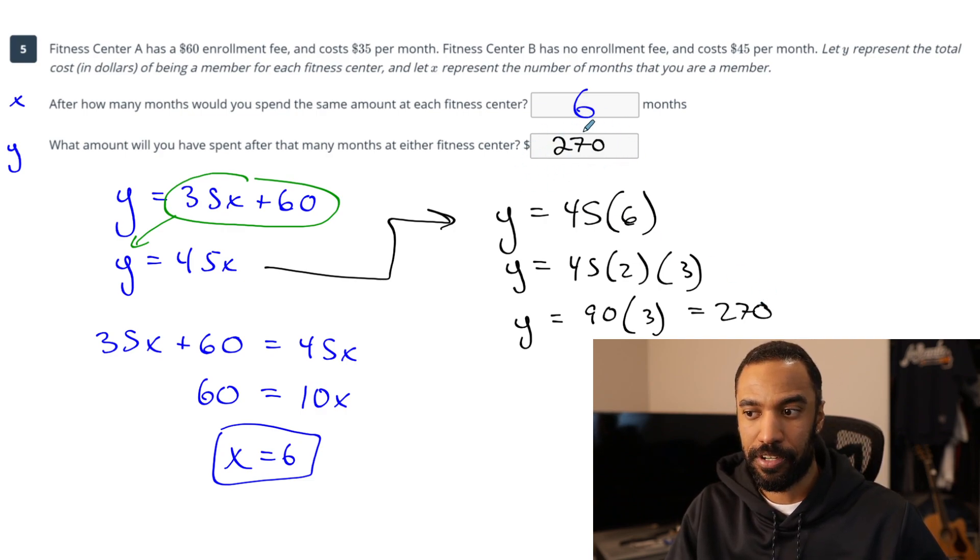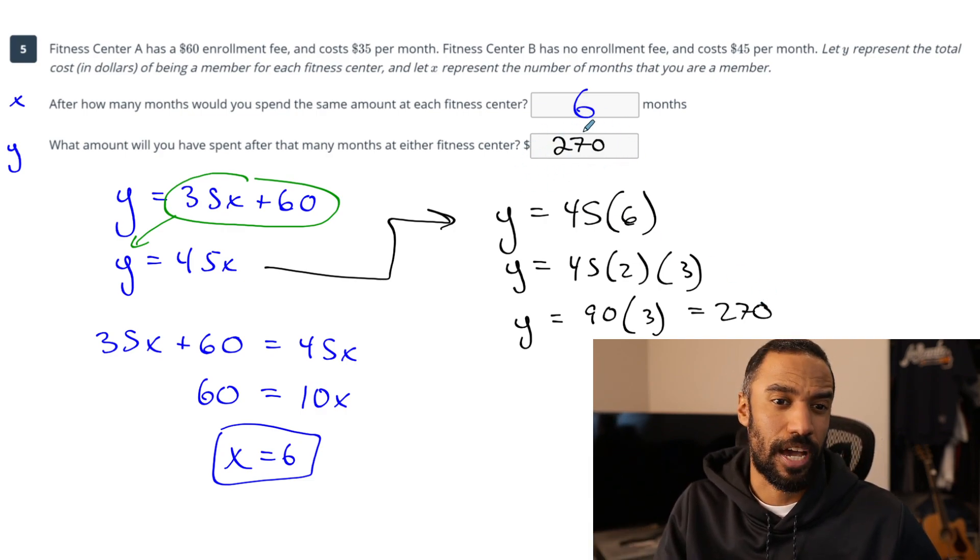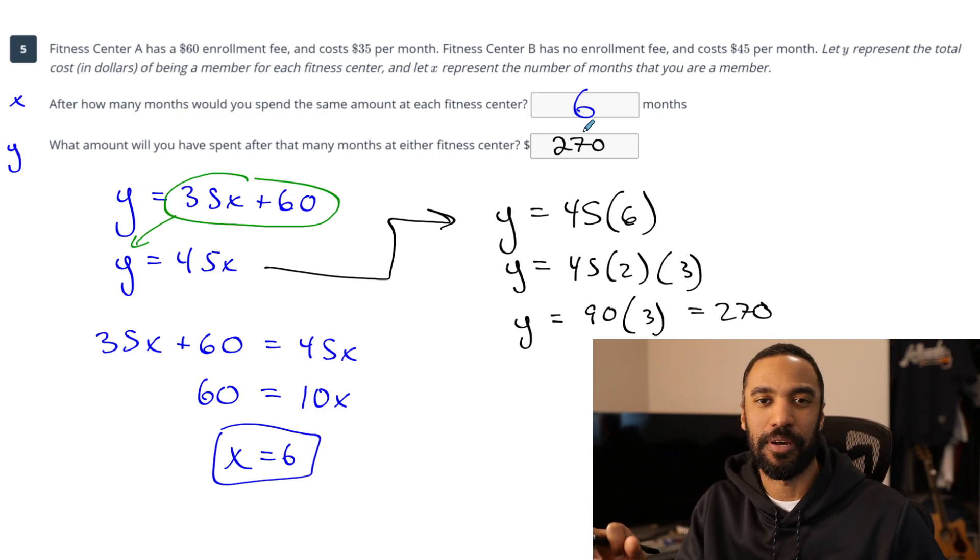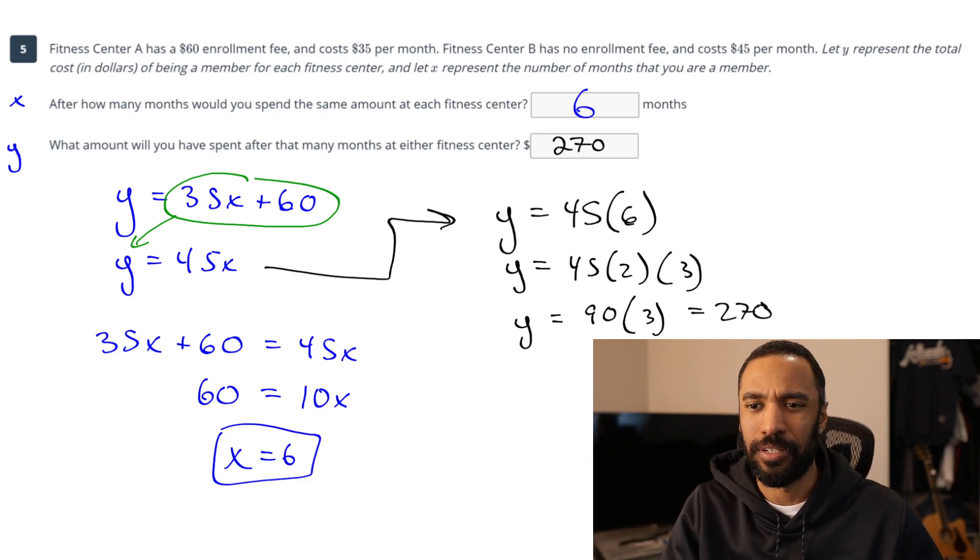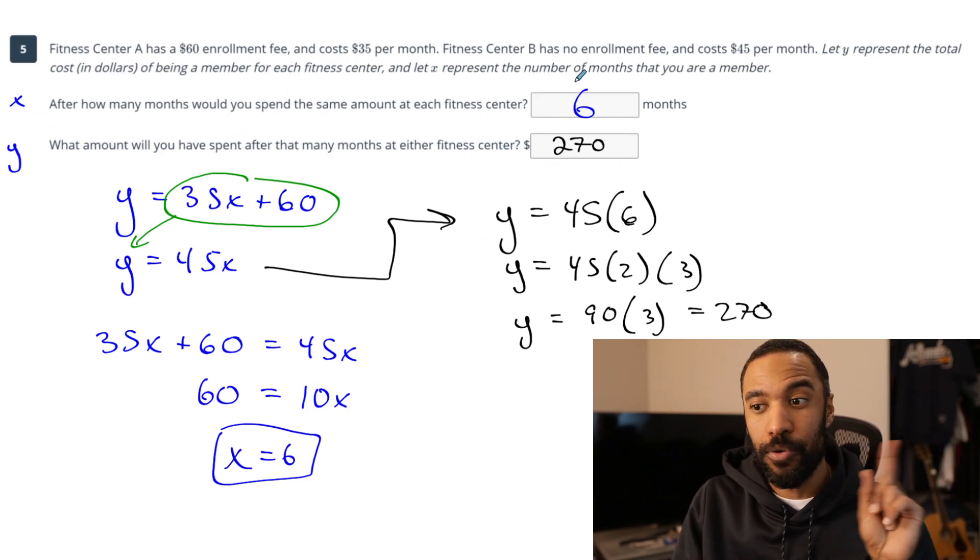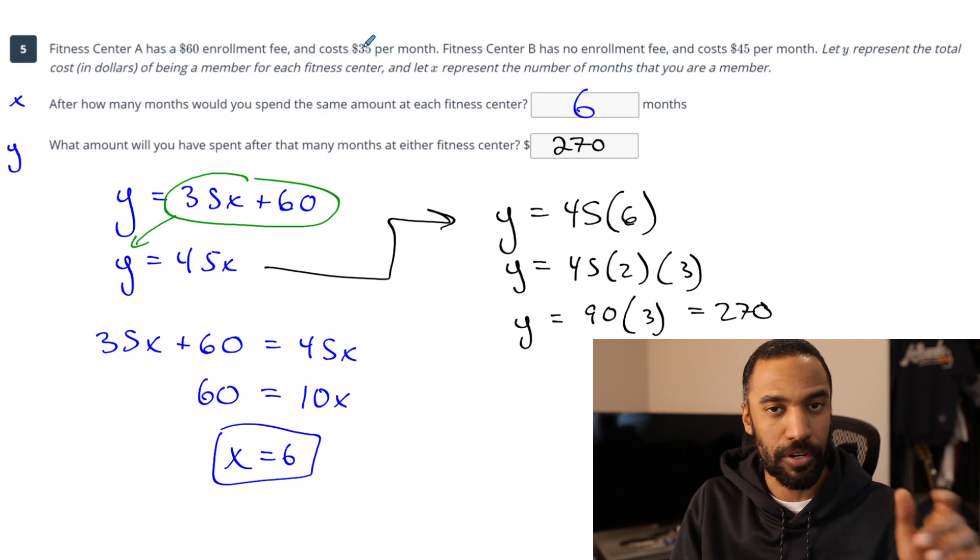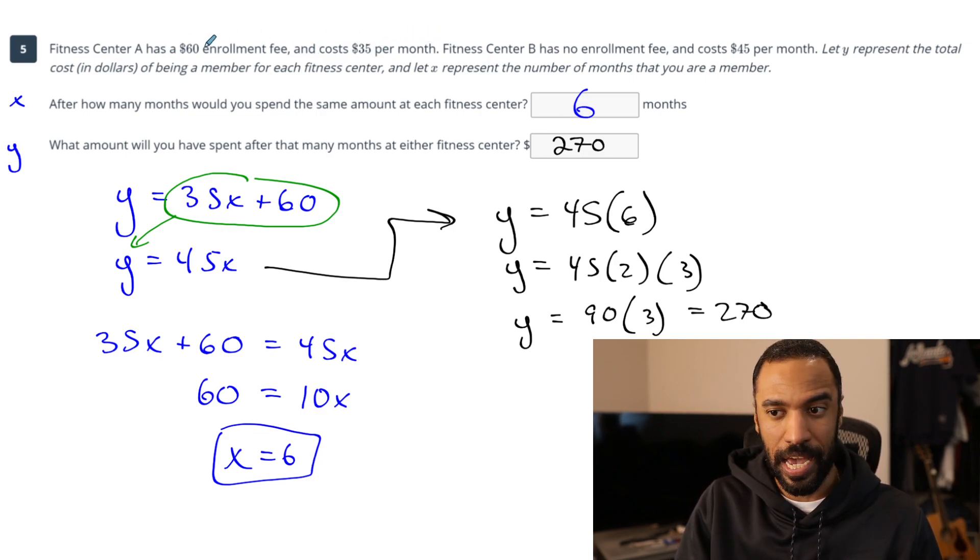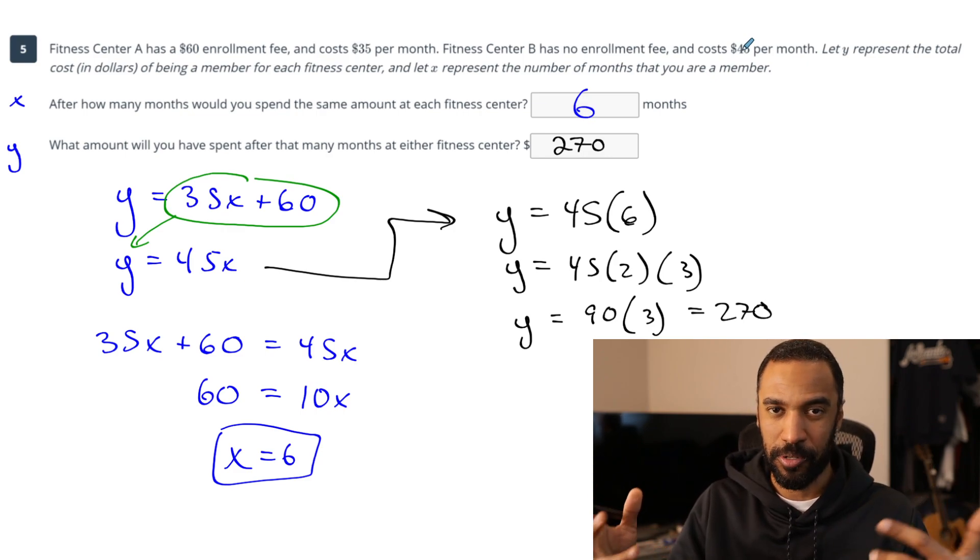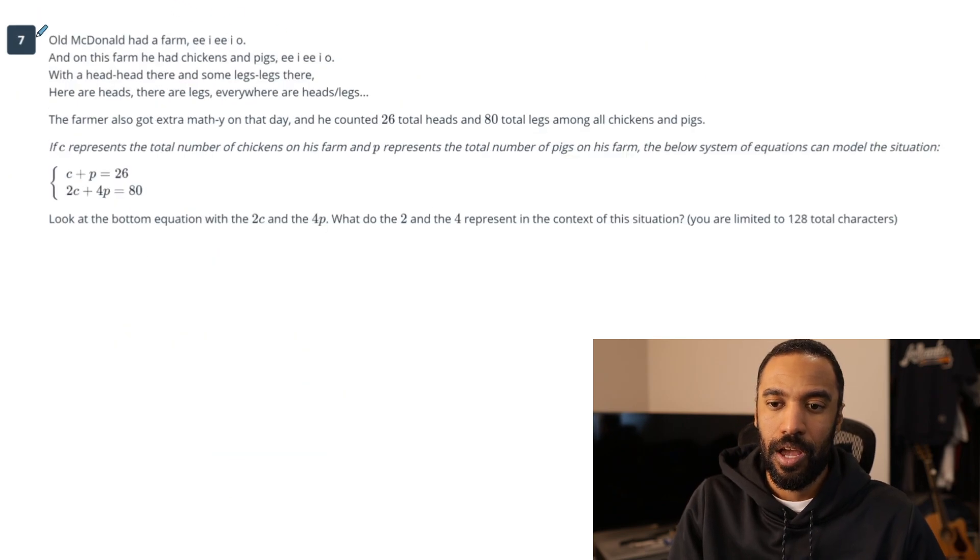$270 is how much you'd spend at either fitness center. I'd say get a Peloton. That costs money too. Just do some push-ups in your living room and go get some fresh air. That's a lot of money for six months no matter which one you choose. If you kept going, fitness A would be a better deal because it's only $35 per month afterward. That $60 enrollment fee is now caught up after six months.